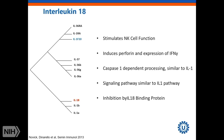IL-18 is a strong stimulator of NK cell lytic function. It induces perforin and the expression of interferon gamma by NK cells. It is very similar to the IL-1 receptor signaling pathway in the sense that it is caspase-1-dependent, and the signaling pathway is quite similar. As with IL-1, which has a naturally occurring inhibitory protein, IL-18 also has a naturally occurring inhibitory protein: IL-18 binding protein.